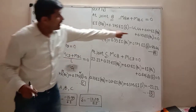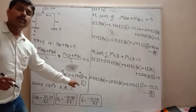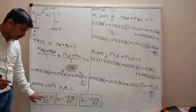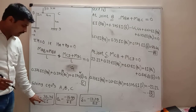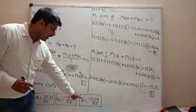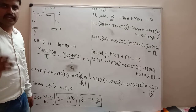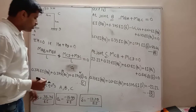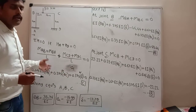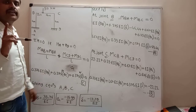Solving equations A, B, and C simultaneously, we get the unknowns: theta_B = 33.76/EI, theta_C = minus 15.99/EI, and delta = minus 17.78/EI. We then substitute all these values into our six slope deflection equations to obtain the final end moments.